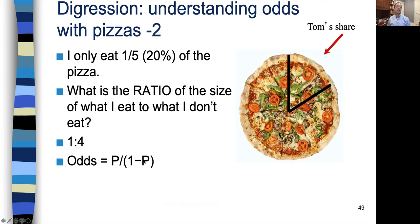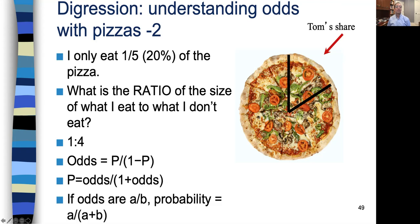The other conversion is: probability equals odds over one plus odds. Or a slightly easier way: if the odds are a to b, then probability is a over a plus b. So if odds are one to four, probability is one over one plus four, which is one-fifth. Both formulas will work.